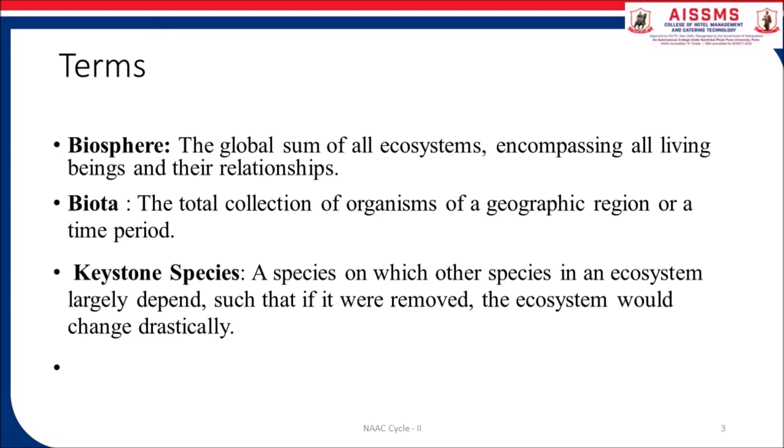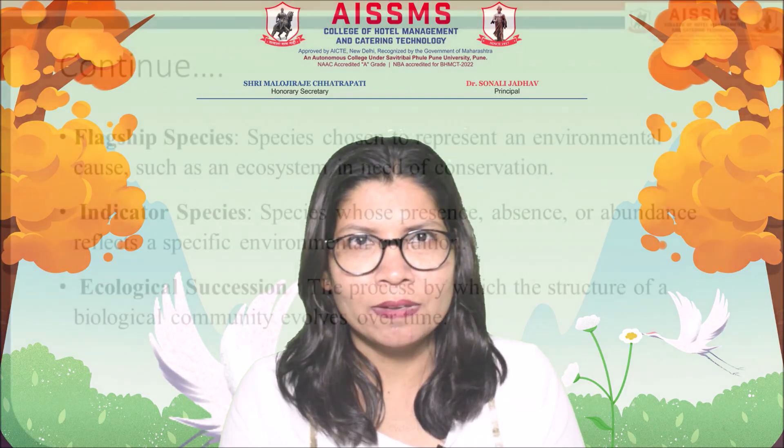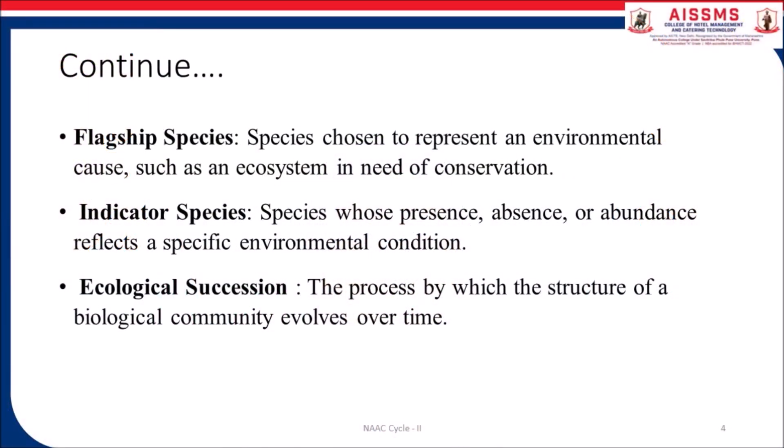Keystone species: a species on which other species in an ecosystem largely depend, such that if it were removed, the ecosystem would change drastically. Flagship species: a species chosen to represent an environmental cause such as an ecosystem in need of conservation. Indicator species: a species whose presence, absence, or abundance reflects a specific environmental condition.